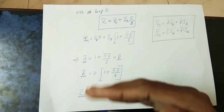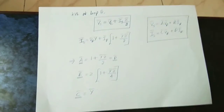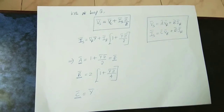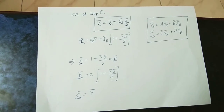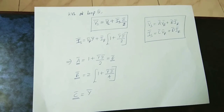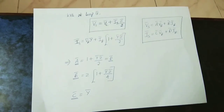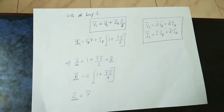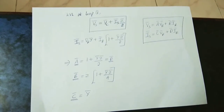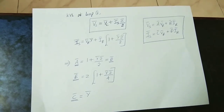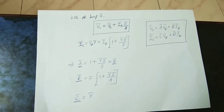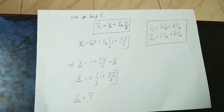This is the derivation of ABCD parameters — or ABCD constants — of a Nominal T Medium Transmission Line. You can tell the short answer for Nominal T and Nominal Pi in the comments of this video. I hope you enjoyed this video. See you guys. Take care. Bye. Cheers. Thank you for watching.